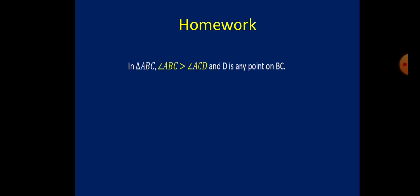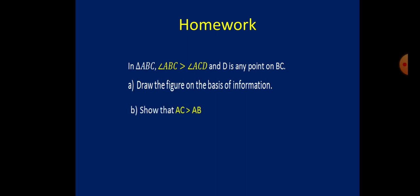Here is your homework: in triangle ABC, angle ABC is greater than angle ACD, and D is any point on BC. Draw the figure, then show that AC is greater than AD. Finally, if angle ABC equals angle ACD, prove that AB is greater than AD.